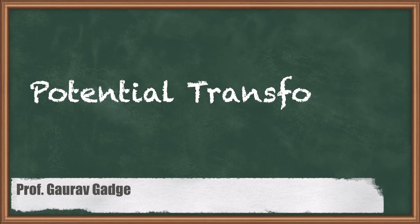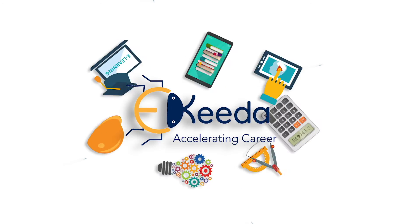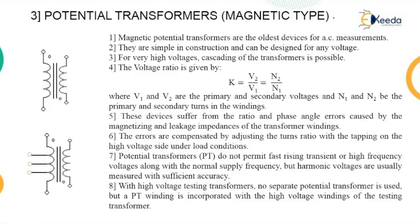In this lecture, I am going to discuss the third topic of high voltage AC measurement — the potential transformer, also called a voltage transformer (PT or VT). This potential transformer is similar to the current transformer used in current measurement. In a potential transformer, the number of turns on the primary are more, which is generally the high voltage terminal.